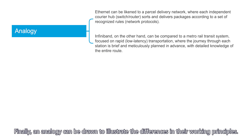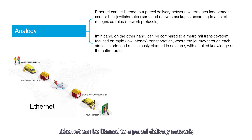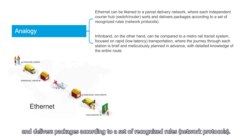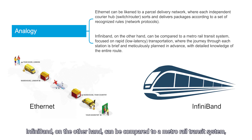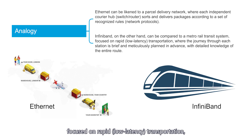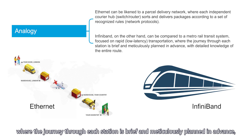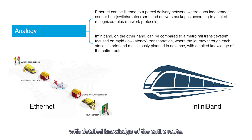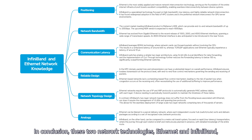Finally, an analogy can be drawn to illustrate the differences in their working principles. Ethernet can be likened to a parcel delivery network, where each independent courier hub — switch or router — sorts and delivers packages according to a set of recognized rules, i.e., network protocols. InfiniBand, on the other hand, can be compared to a metro rail transit system, focused on rapid, low-latency transportation, where the journey through each station is brief and meticulously planned in advance, with detailed knowledge of the entire route.